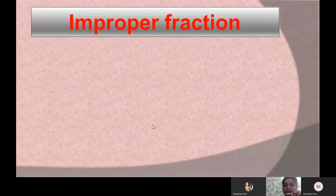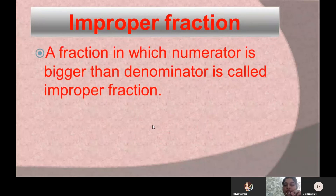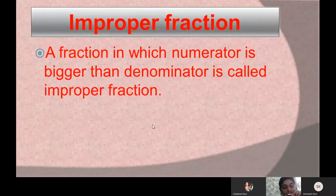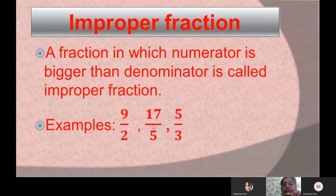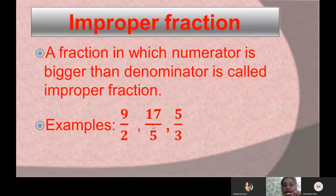Next is improper fraction. An improper fraction is that fraction in which the numerator is bigger than the denominator — it means the number written on the top is greater than the number written under it. For example, we are having the fractions 9 by 2, 17 by 5, and 5 by 3. In every fraction, the number on the top is greater than the number written under it. See in fraction 9 by 2, 9 is bigger than 2.